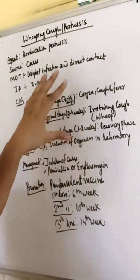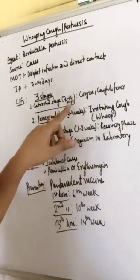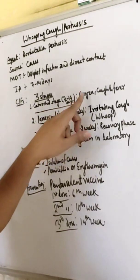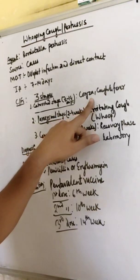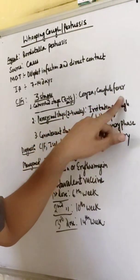Clinical features are in three stages. Catarrhal stage, 7 to 14 days. In this stage, coryza, running nose, cough, and fever will be seen.